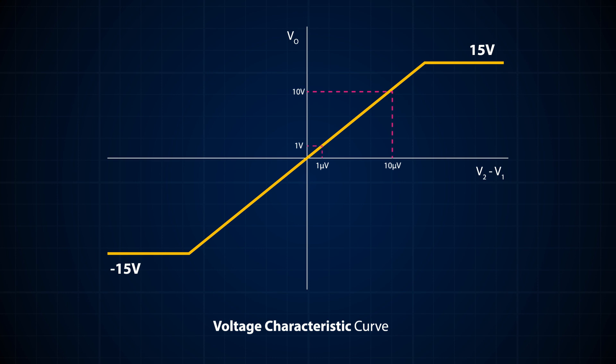If you go in the opposite direction — that is, applying a negative differential voltage, or grounding V1 and supplying the voltage to V2 — a minus 1 microvolt signal gives a minus 1 volt output, and minus 10 microvolts gives a minus 10 volt signal. If the negative biasing voltage is minus 15 volts, then Vout saturates at minus 15 volts.